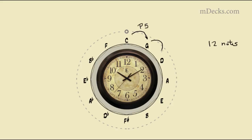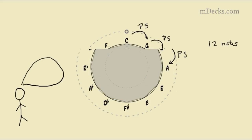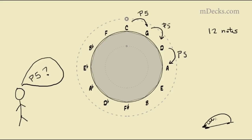Each note in the circle is a perfect fifth above the previous note. The perfect fifth is one of the most important intervals in music. No wonder it's called perfect.